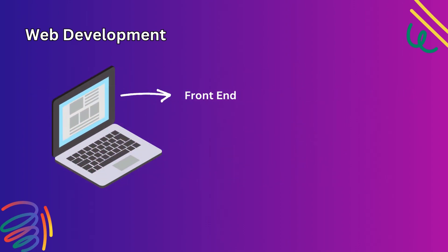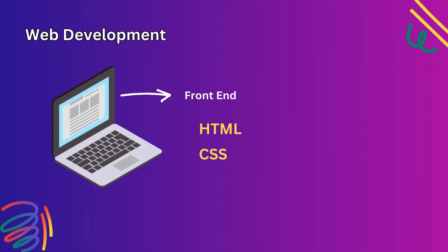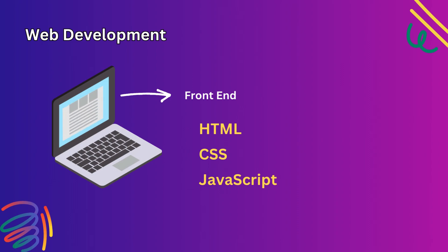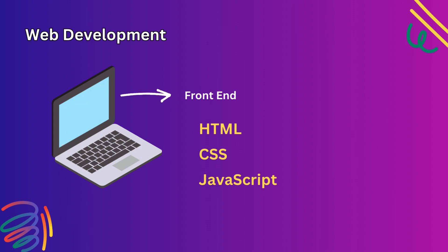The programming languages used for front-end web page development are HTML, CSS, and JavaScript. HTML is used to display the content in the browser. CSS is used to display that content in a controlled and beautiful way. JavaScript is used to make the web pages user interactive. All these are part of the front-end, meaning the user side.